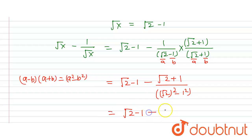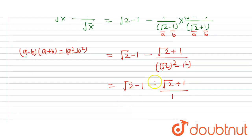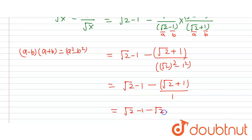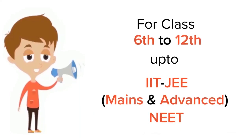We are getting under root 2 minus 1 minus (under root 2 plus 1) divided by 1. The under root 2 terms cancel out, so finally we are getting minus 2. So the answer is minus 2. Thank you.